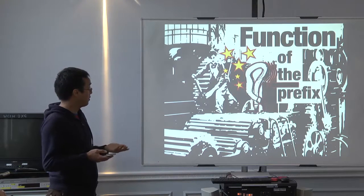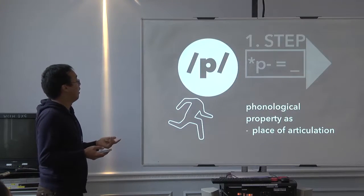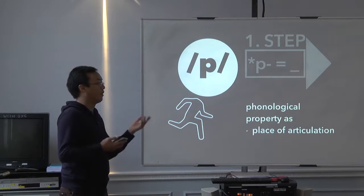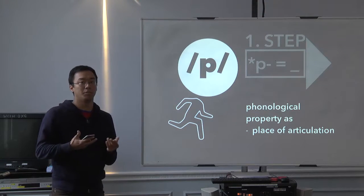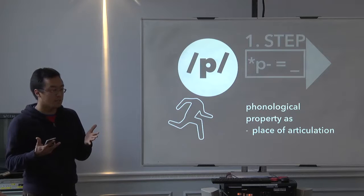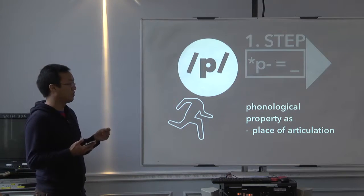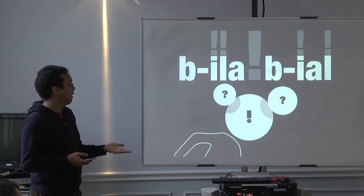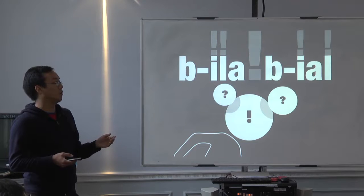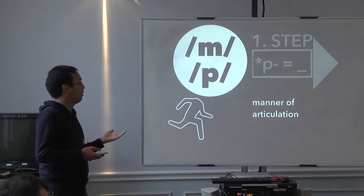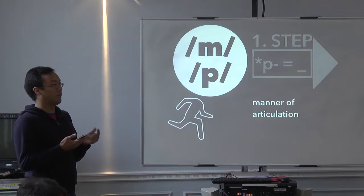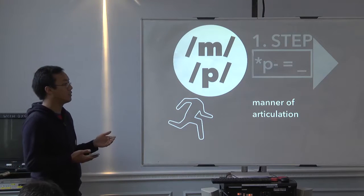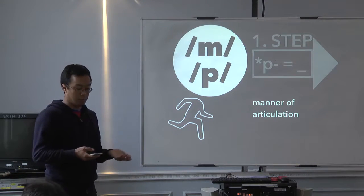As I said, the function of the P prefix is still unknown, so one of my first steps was to figure out the phonological property of the sound P. In terms of place of articulation, P is bilabial — which is also the case for M. The only distinction between M and P is the manner of articulation: M is nasal and P is plosive, but they are both bilabial.